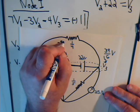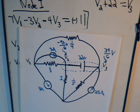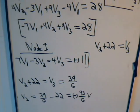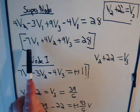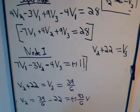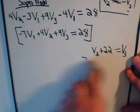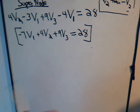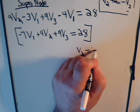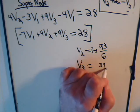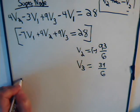And what about V1? Well, we had these earlier equations here that involved V1, V2, and V3. We had one from node 1 and another one from the super node. We could pick either one of them. Let's take this one.